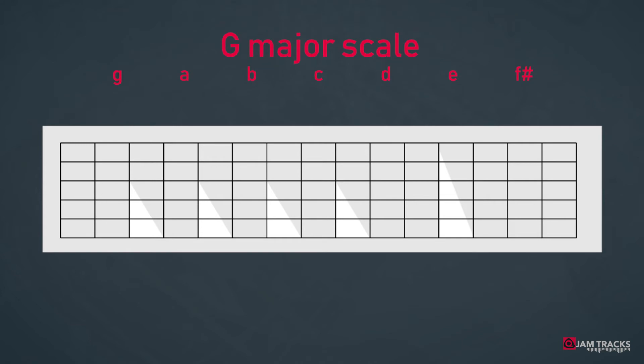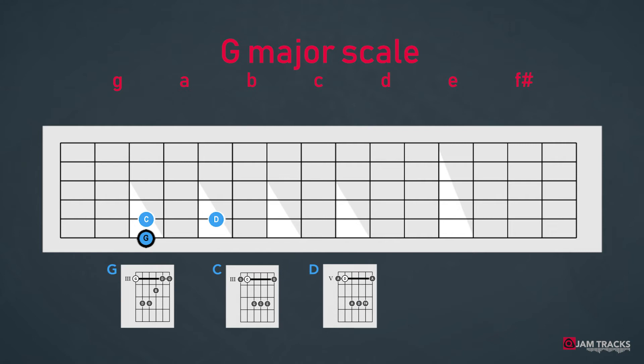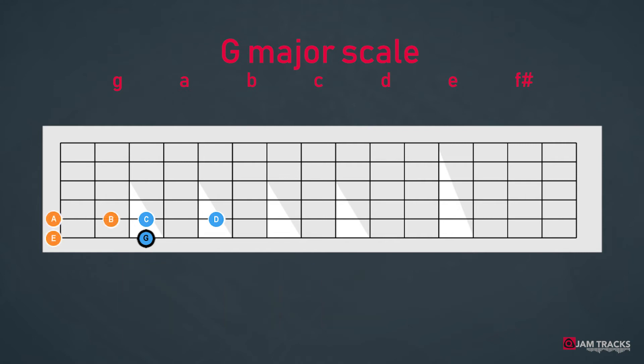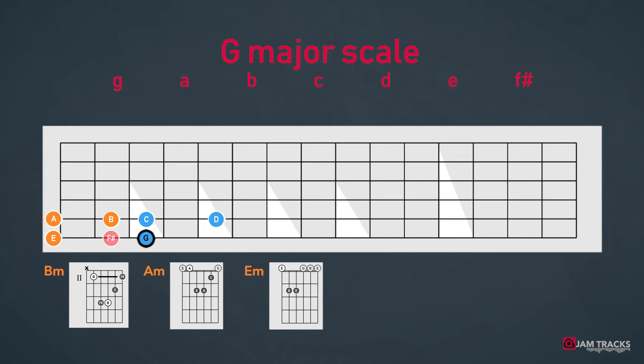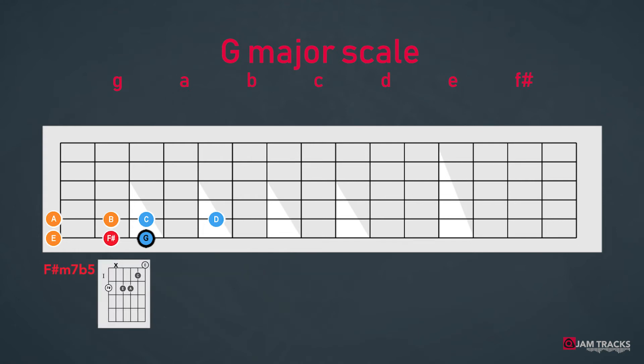Let's look at G major. For the G major key we'll have to use some open strings but we can still use our system. The major triangle, G major, C major, D major. The minor triangle, B minor, A minor and E minor. And the last one is the F sharp diminished chord.